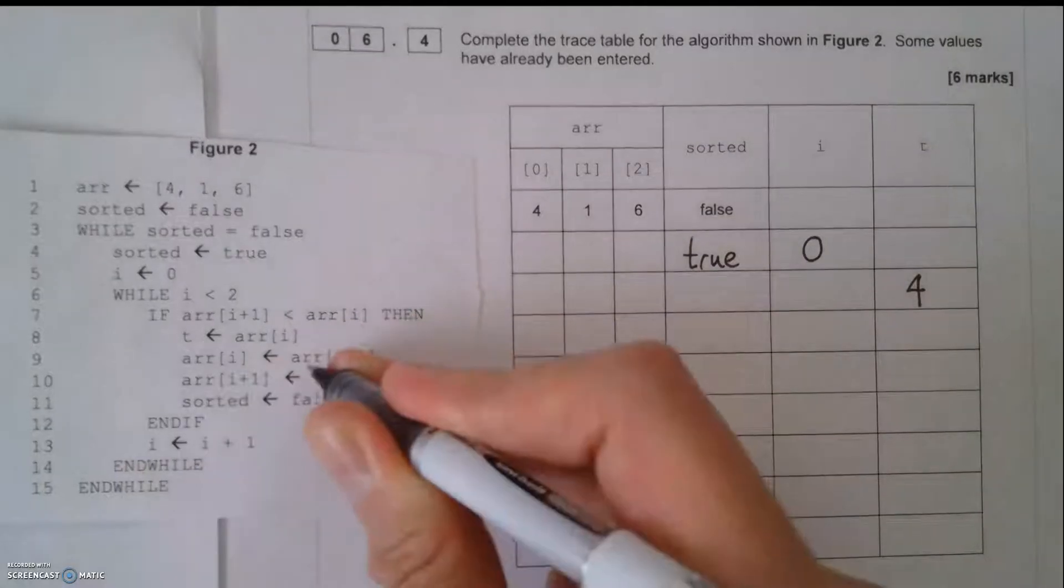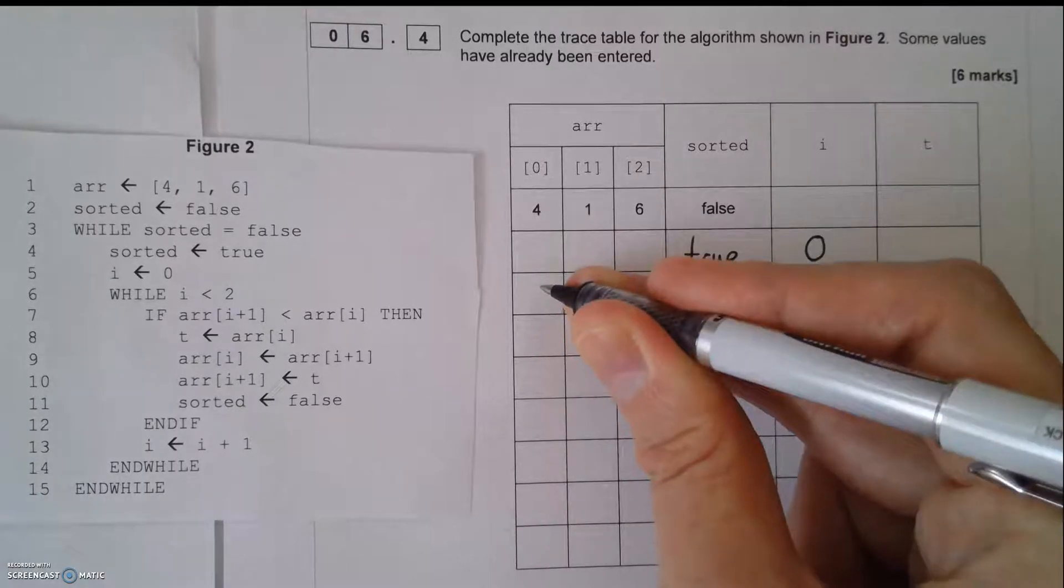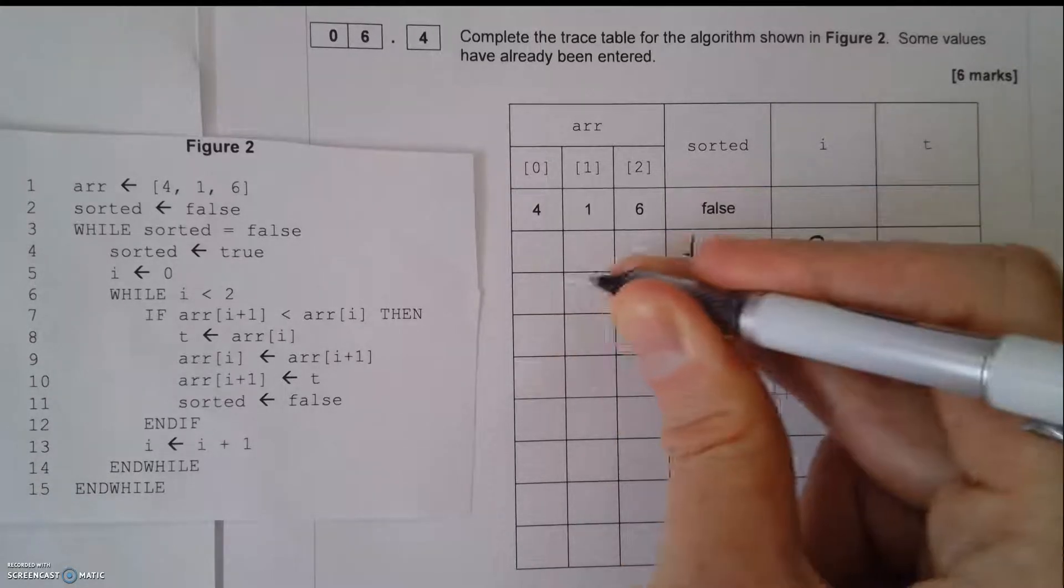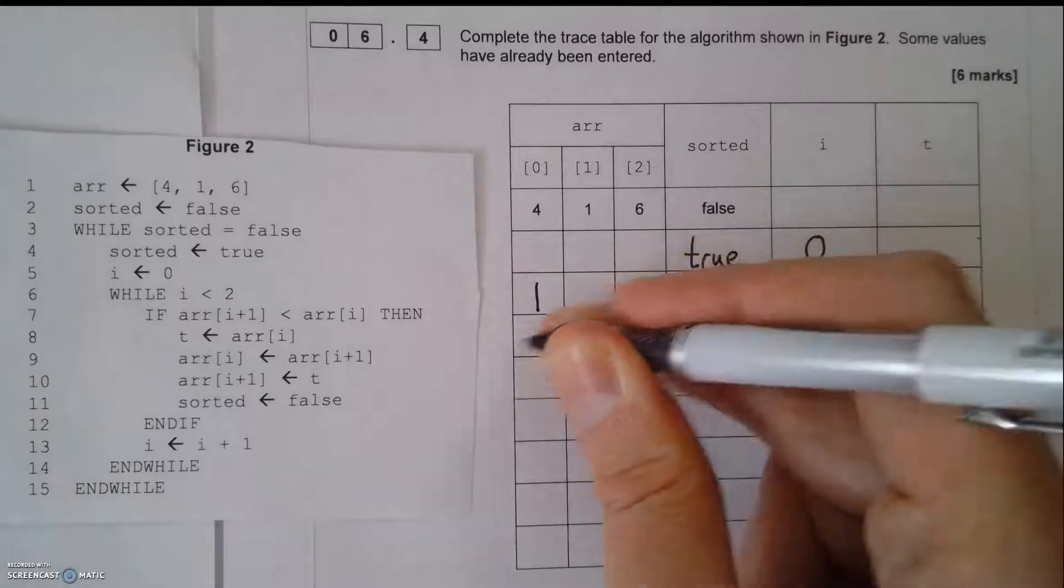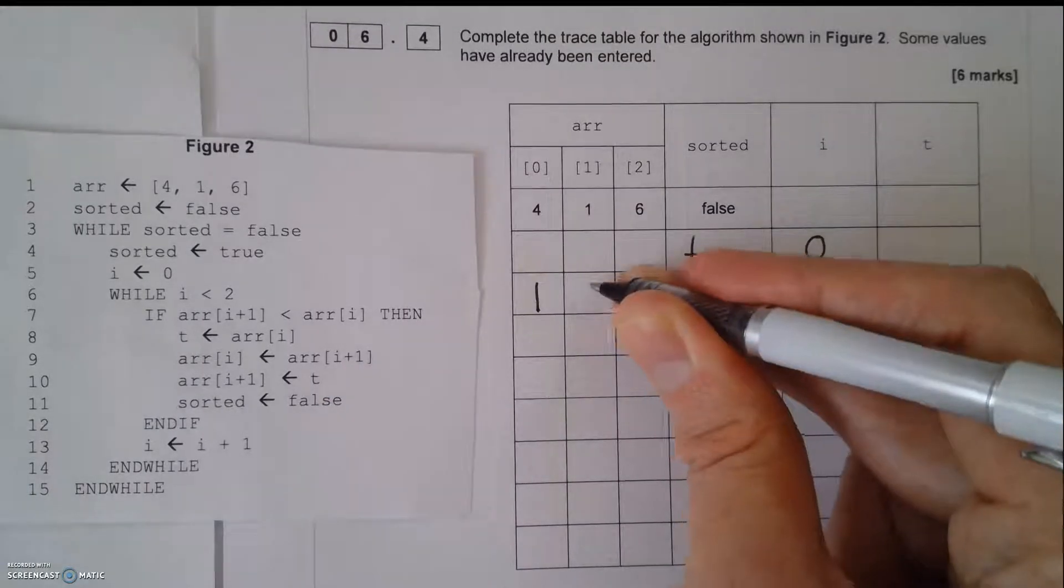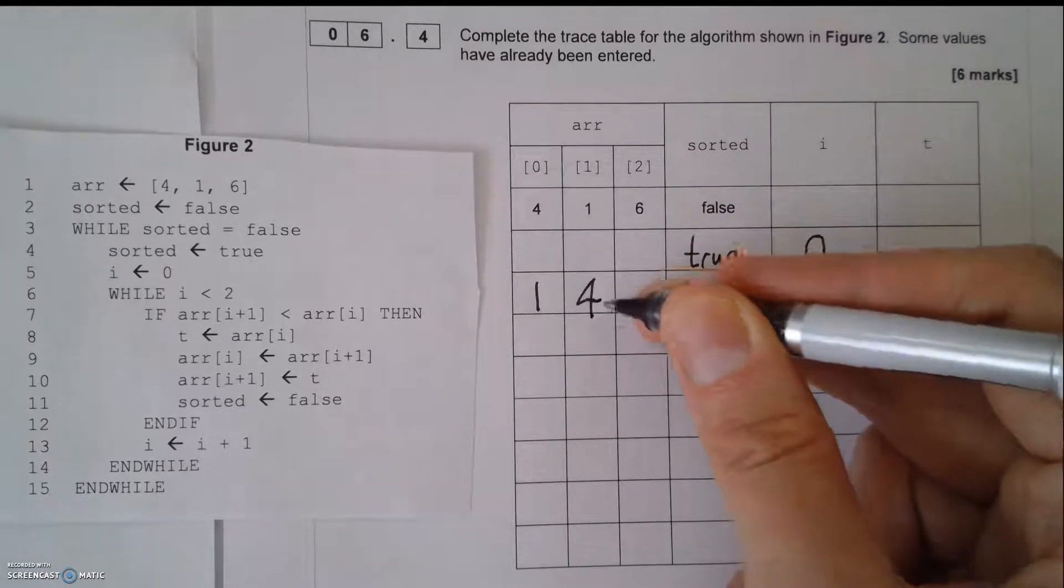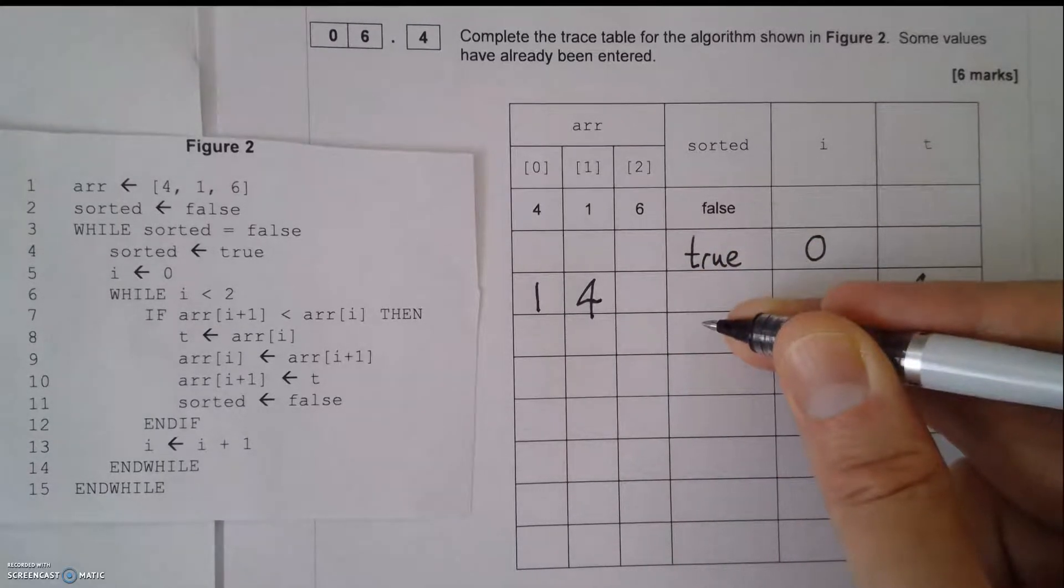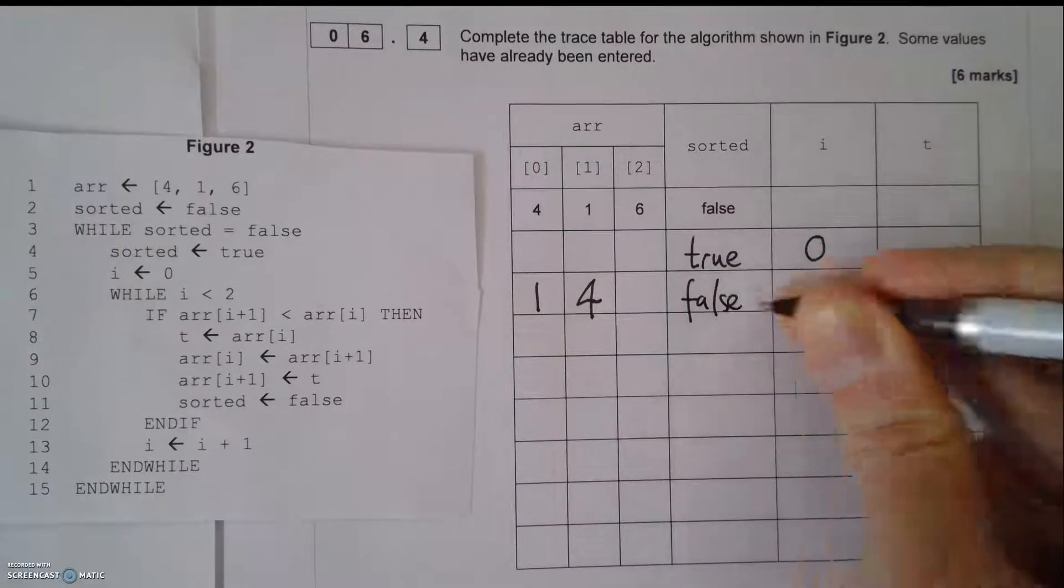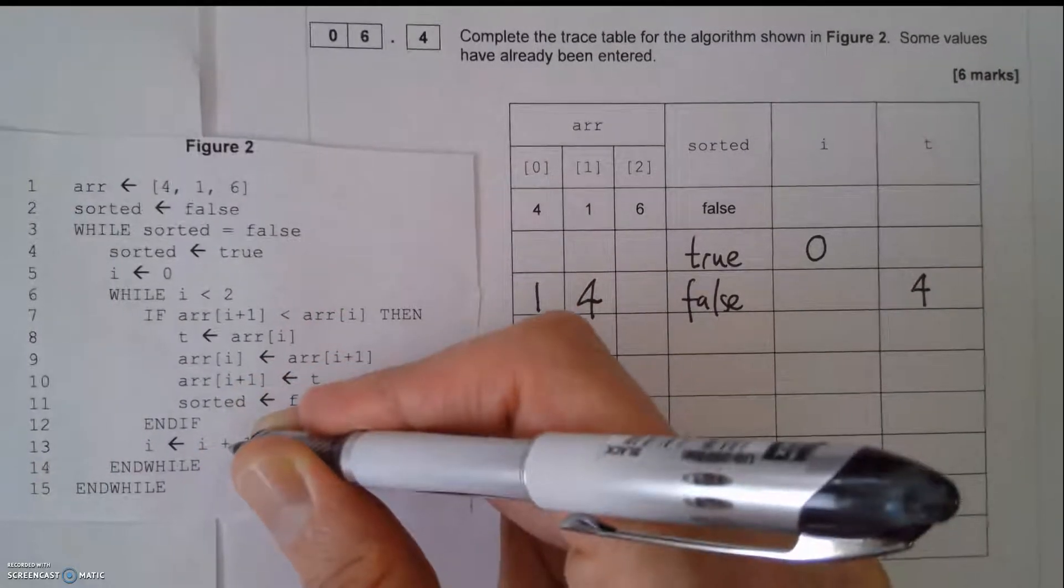So array i equals array i plus 1. Array i, that's 0, equals array i plus 1. So array i plus 1 is 1. So array i is going to equal that now, so 1 is going to go in there. And array i plus 1 equals t. So t contains 4, so 4 is going to go in there. And what we can see is that looks like that's been swapped. There's a bit of a swap going on there. And finally, sorted is now equal false. So sorted has gone back to false.